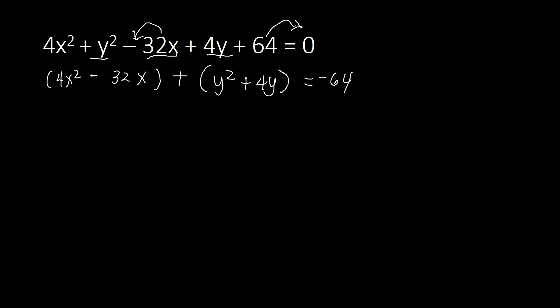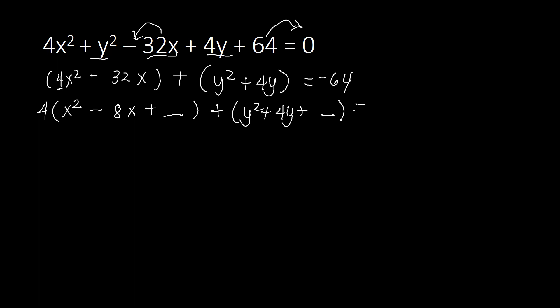Next, we check whether the squared variable has a coefficient. For x squared, we have the number 4, so we take that out by factoring. Taking out 4, the terms inside the parenthesis are divided by 4: 4x squared divided by 4 is x squared, and minus 32x divided by 4 is minus 8x. Then we will be adding something to this group. For y squared, we don't have a visible coefficient, so we copy y squared plus 4y and add something to it. On the right side we have negative 64, and we'll be adding something to both sides.